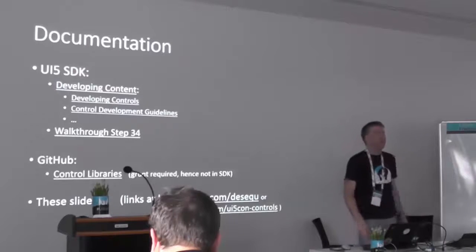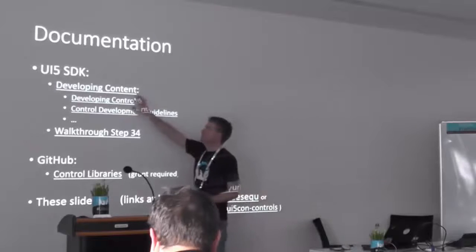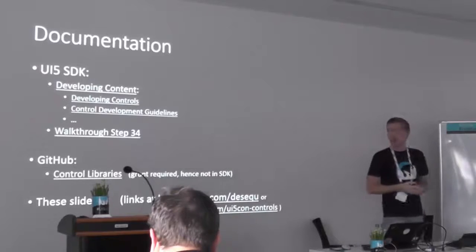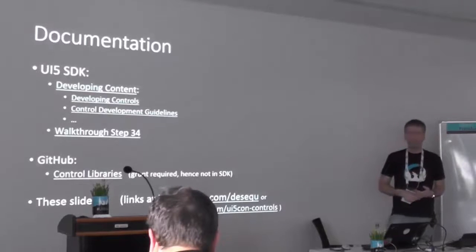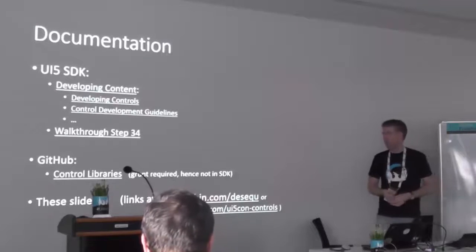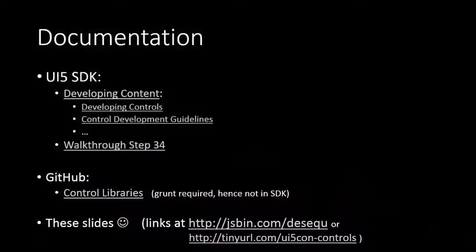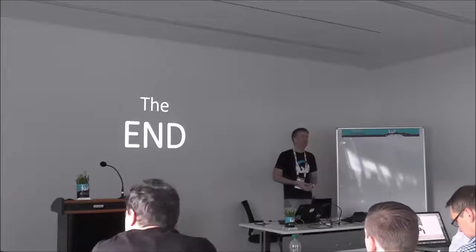I have 12 seconds left! The documentation is in the demo kit and SDK. Developing content is the entry point for extending UI5 with additional controls — how controls are developed, guidelines for control development. There's also one walk-through step about custom controls, which is really recommended if you haven't done it. And the GitHub documentation about control libraries. These slides also contain some content not documented anywhere yet. I thank you for your attention and hope you got some inspiration for what you could do and how you could develop your own controls. Thanks.